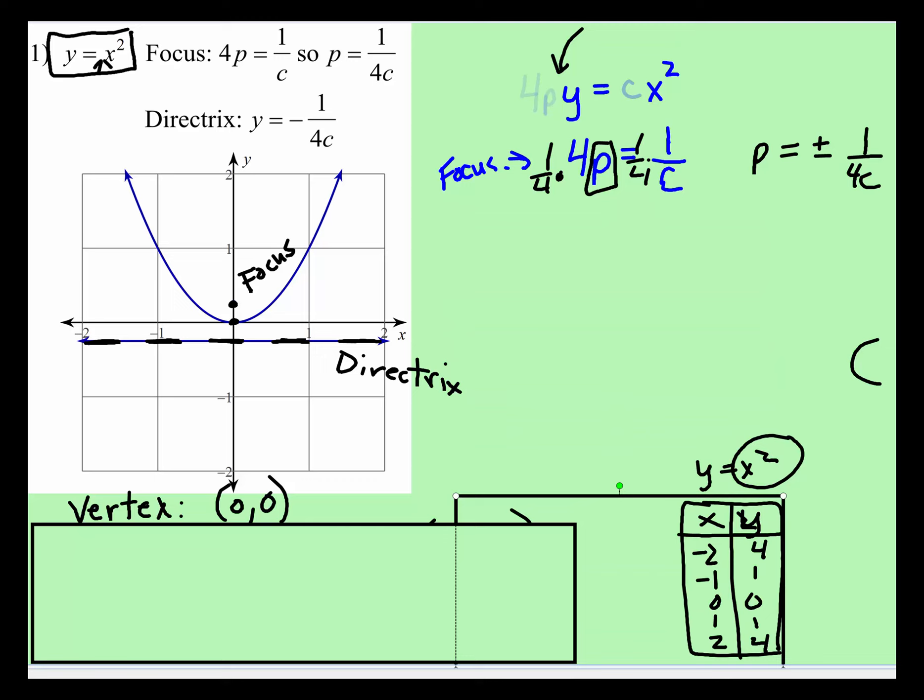So let's take this example right here, that c value, that invisible 1 right there, is equal to 1. So I'm going to put 4p is equal to 1 over the c value, which is 1. So that makes it easy. I'm going to multiply both sides by 1/4, p is equal to, in this case, positive 1/4.